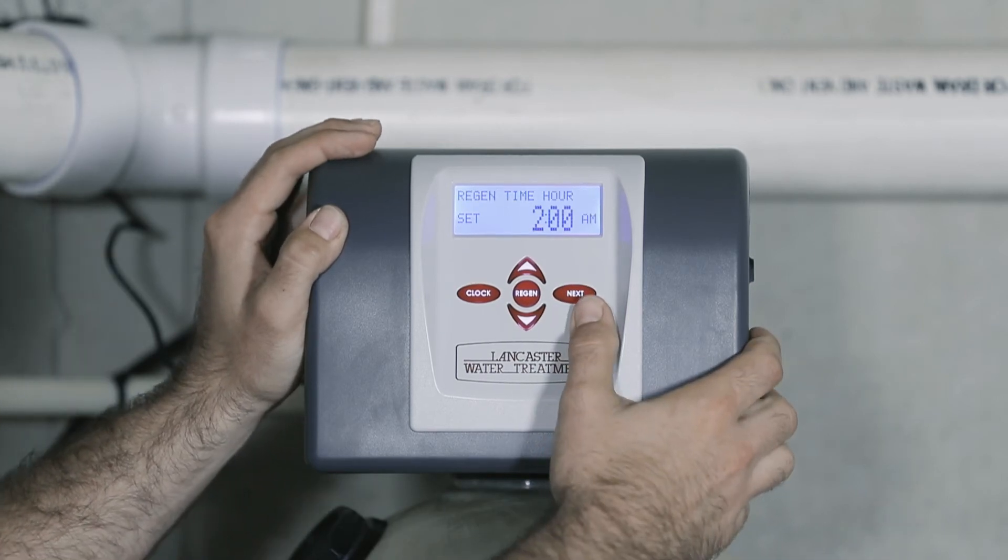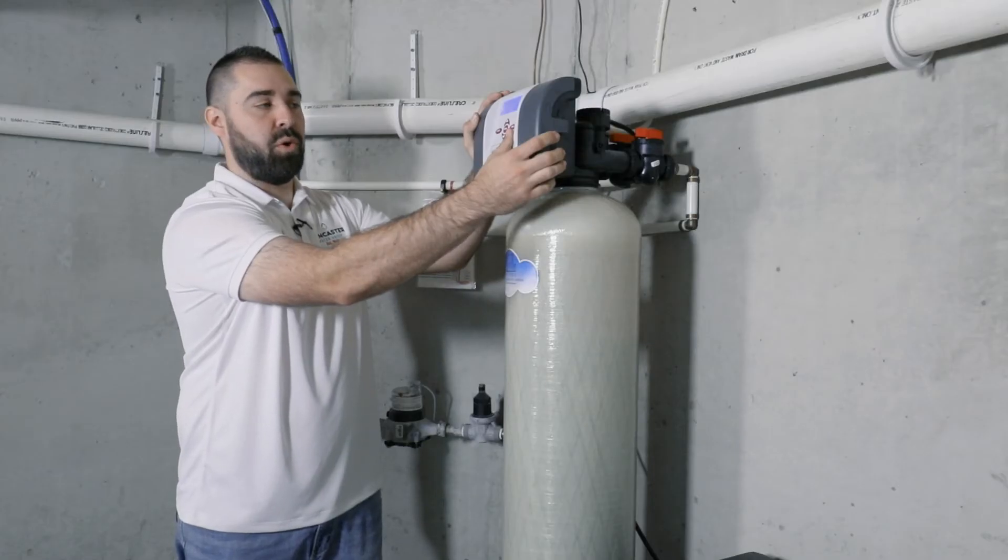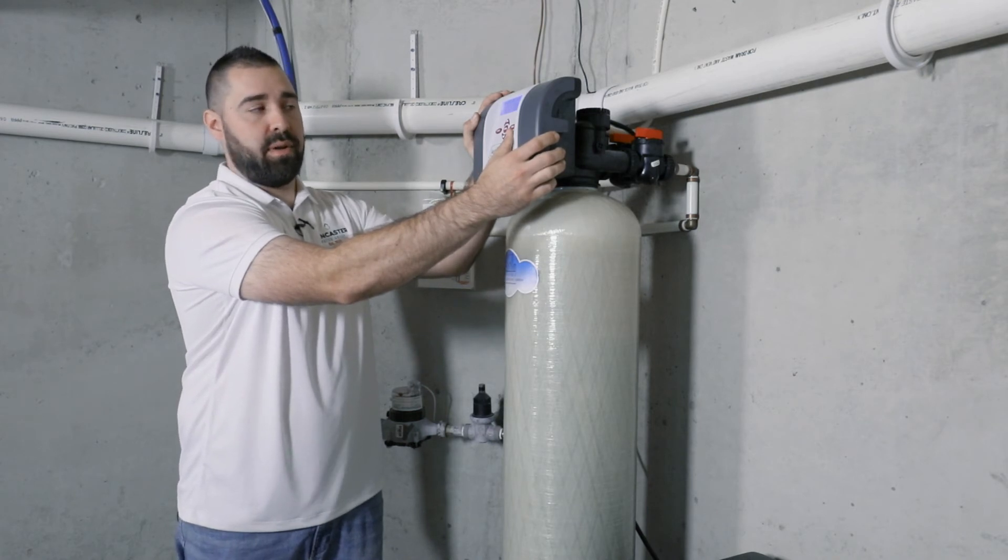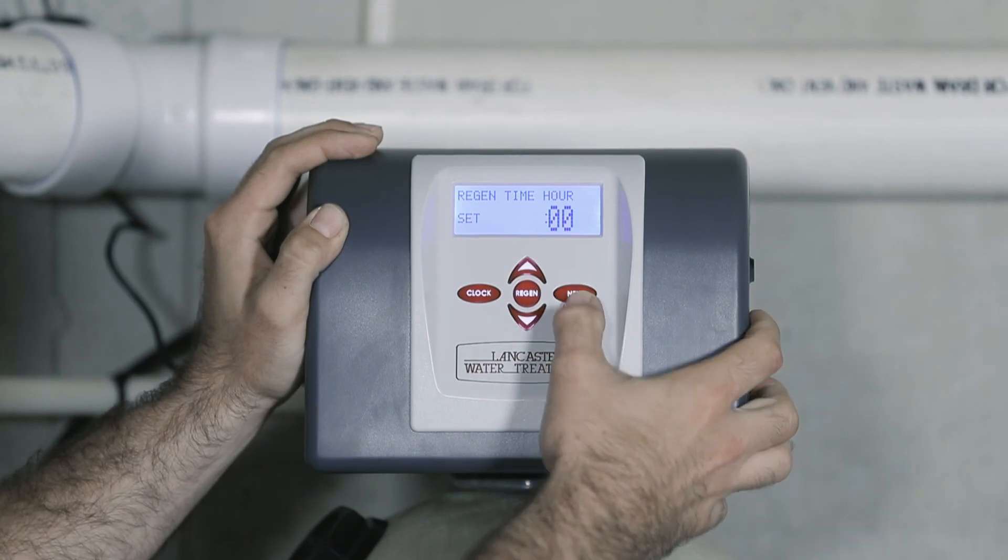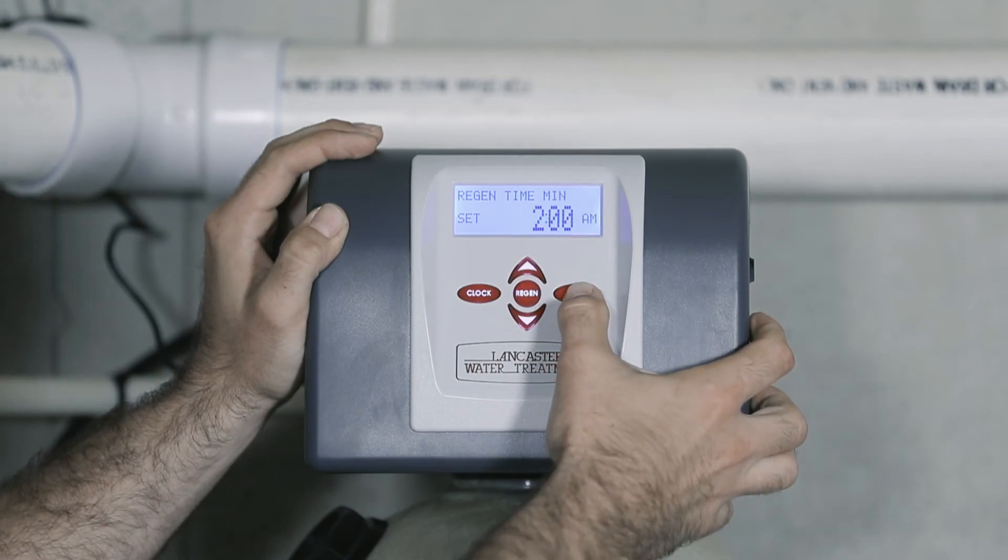Now we have the regeneration time or when the system will regenerate. It is set from the factory at 2 AM. You can adjust that to any time you may need. Press next to the minutes and then press next to enter.